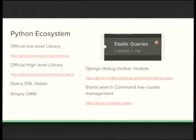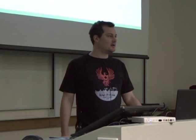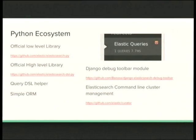The Python ecosystem around Elasticsearch includes the official low-level library, written in Python and using the HTTP interface. More interesting for us is the high-level library, which is a query DSL helper — it helps you write queries a bit like a Django model query, with a simple ORM to save and read objects. I also wrote a module for the Django debug toolbar that does the same kind of thing as the SQL debug toolbar, but for Elasticsearch. There's also an awesome command-line cluster management tool for Elasticsearch written in Python, maintained by Elasticsearch.